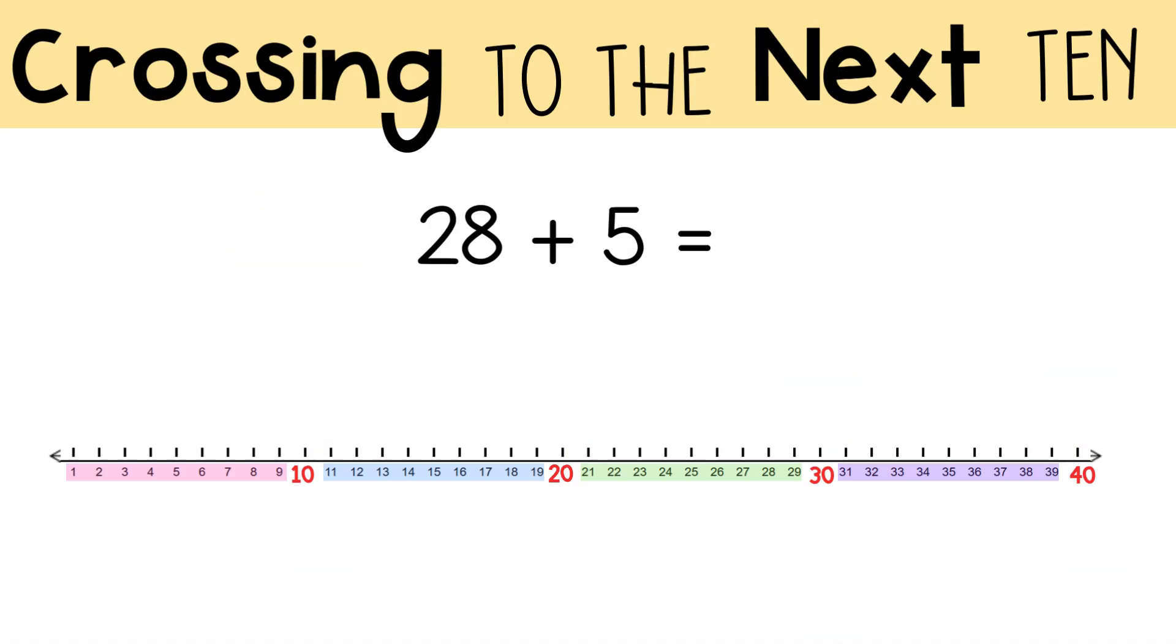Here's an example of crossing to the next 10. Let's say you have 28 and you add 5. Start at 28. Add 2 to get to 30. That's crossing to the next 10. But you still have more to add.